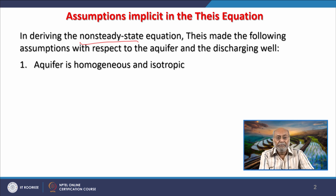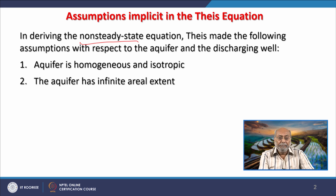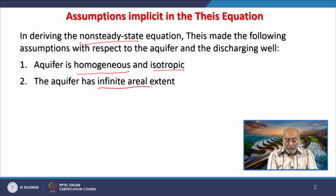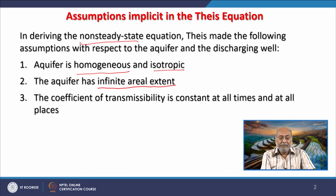These equations can only be applied in limited conditions because every such equation has some assumptions. In groundwater engineering there is no universal equation available to us. But whatever understanding has been developed over centuries, we will be using it to determine the hydraulic characteristics of aquifers. The second assumption is that the aquifer has infinite areal extent — though in reality there might be aquifer boundaries.